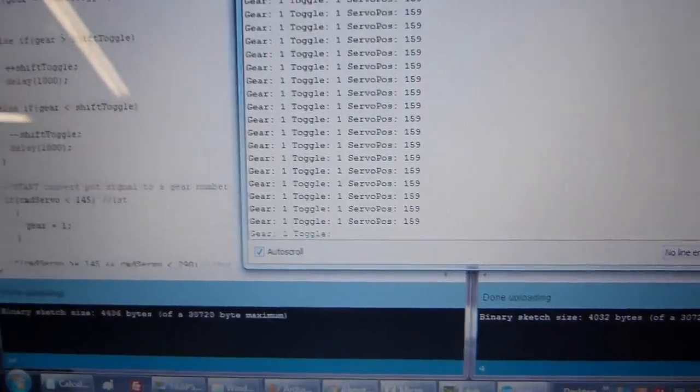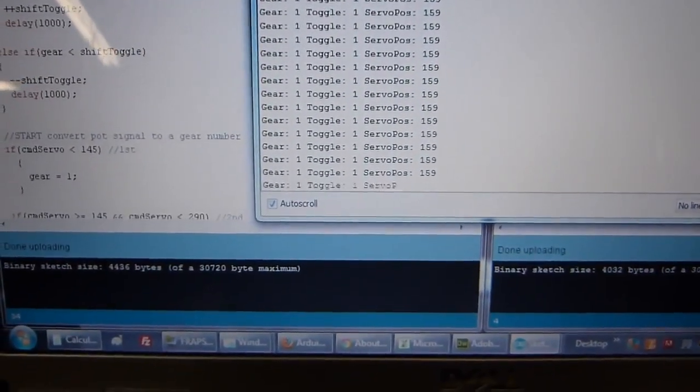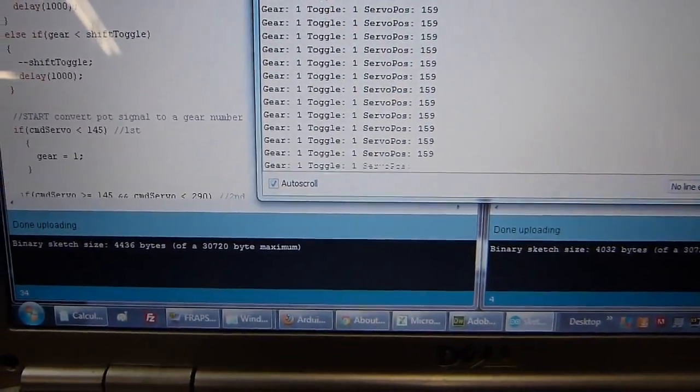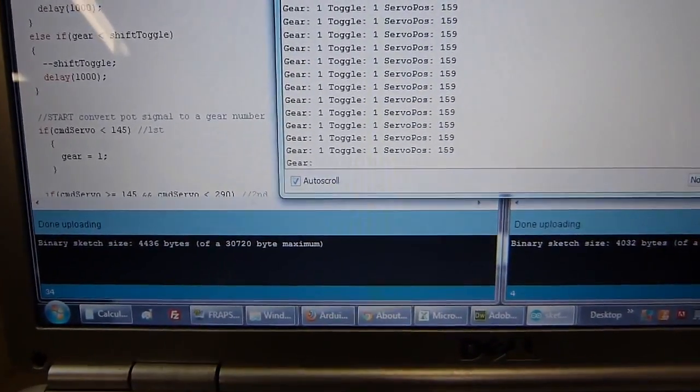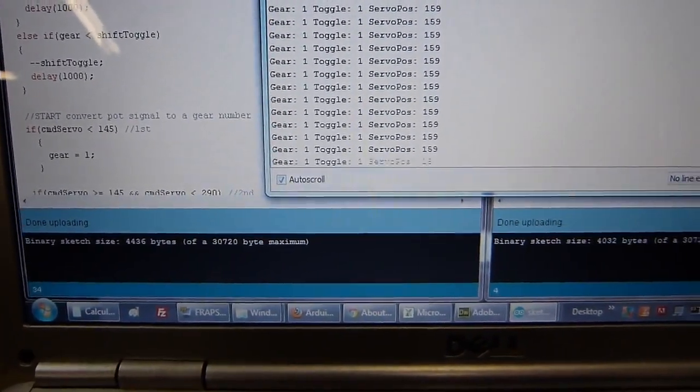So the servo position is relative to the toggle and then the gear is actually the command. I'm commanding, hey I want this gear, but it's got to toggle up and down first. So again, we'll watch this.